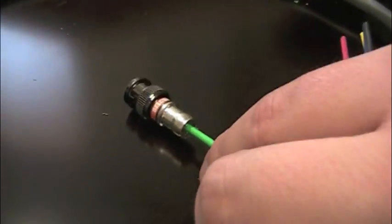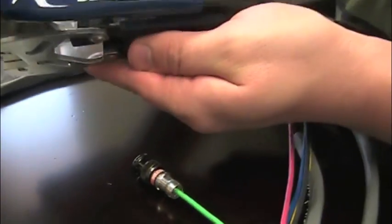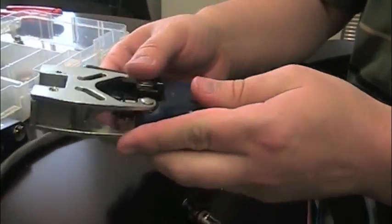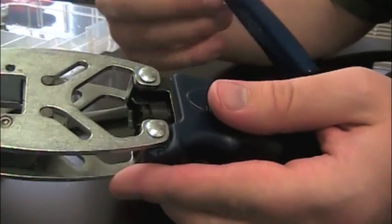The next step is to take your compression tool, which is our standard Belden compression tool with the handle. Same tool used for all these styles of connectors.